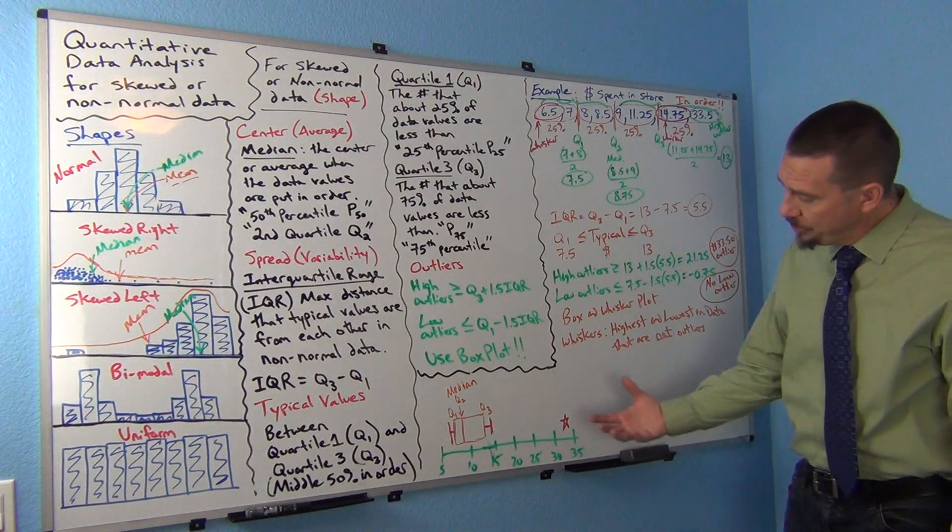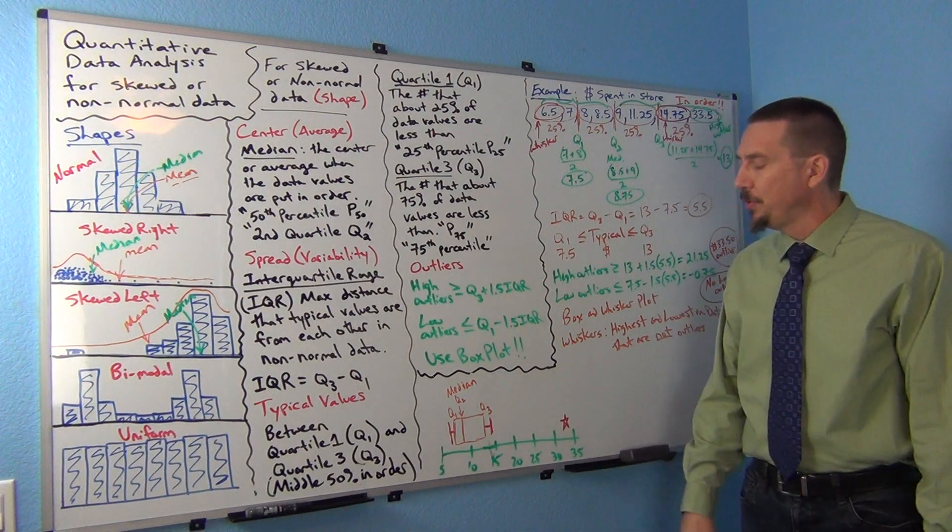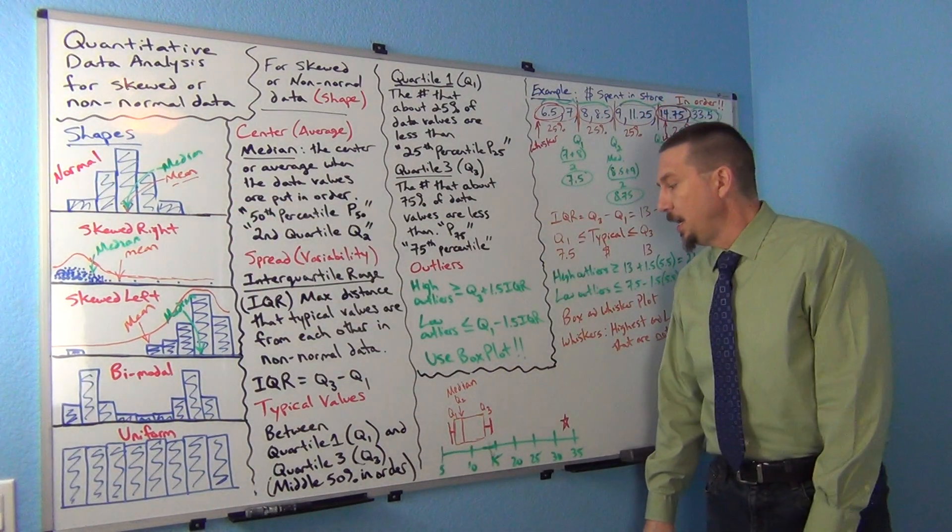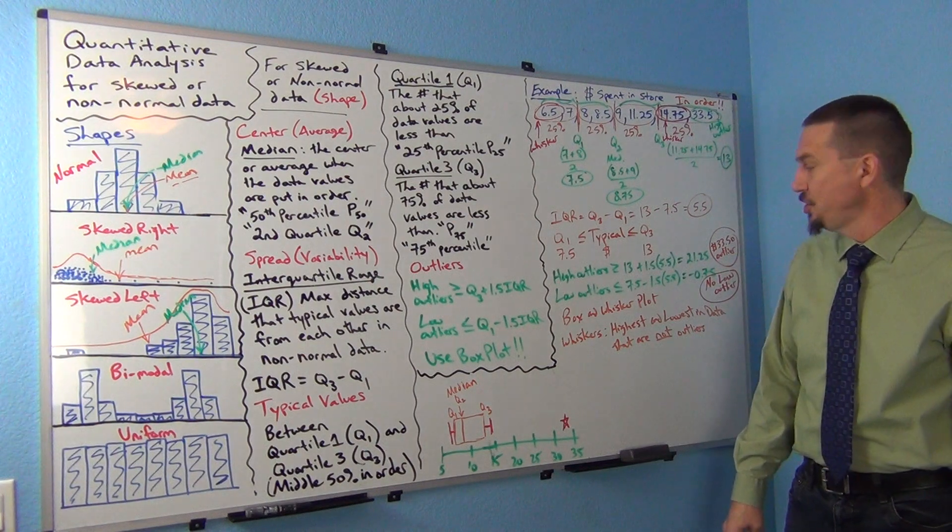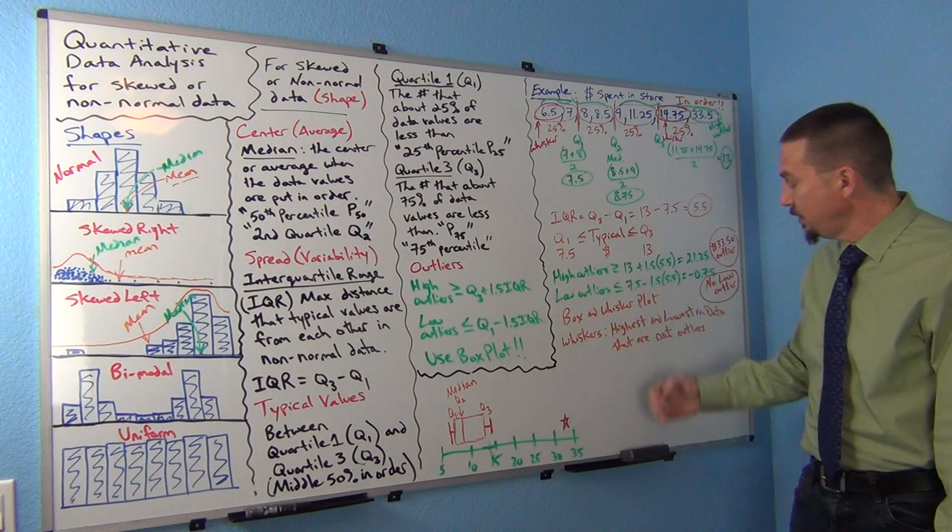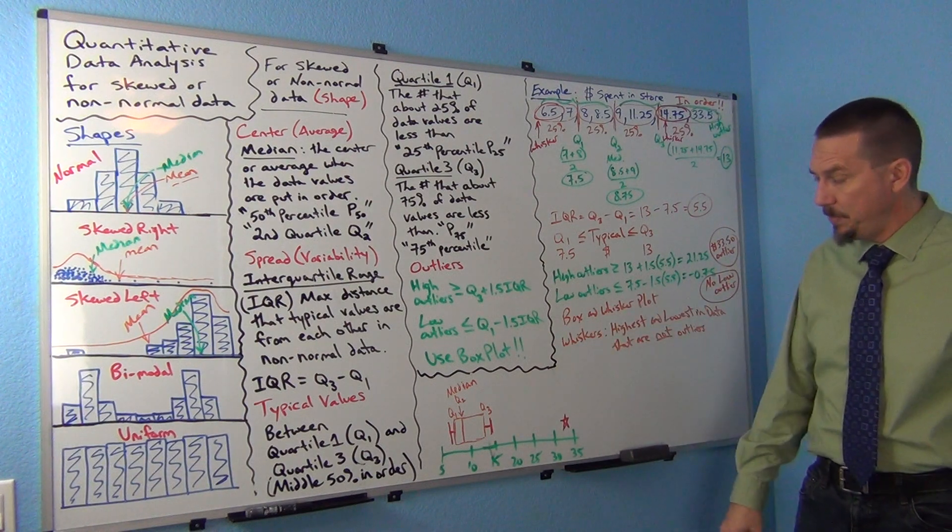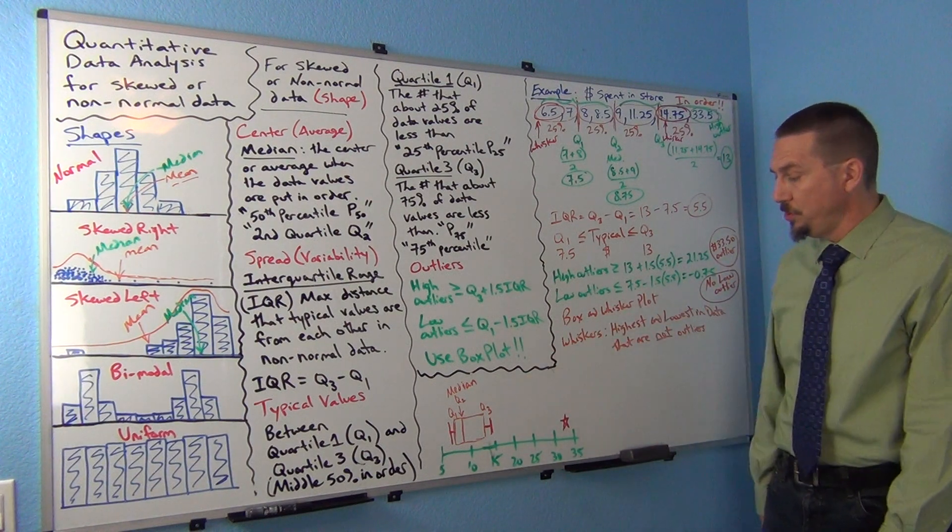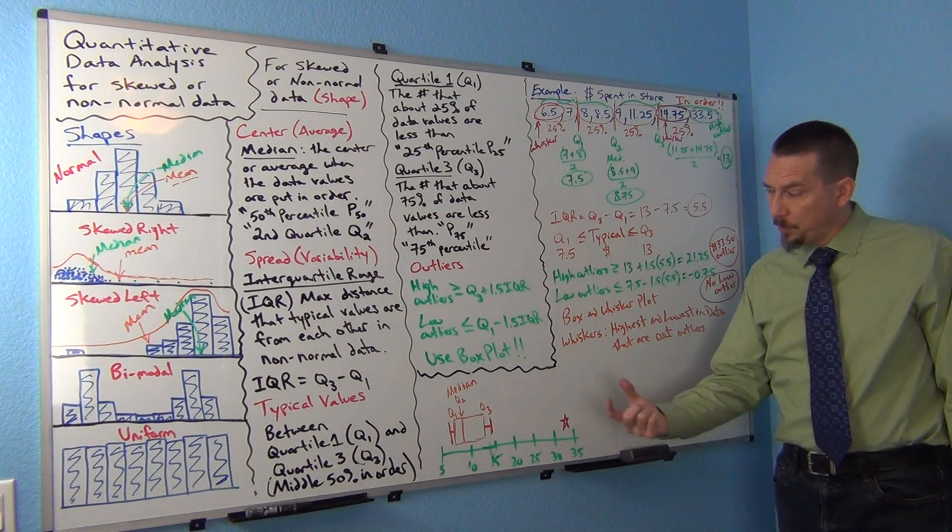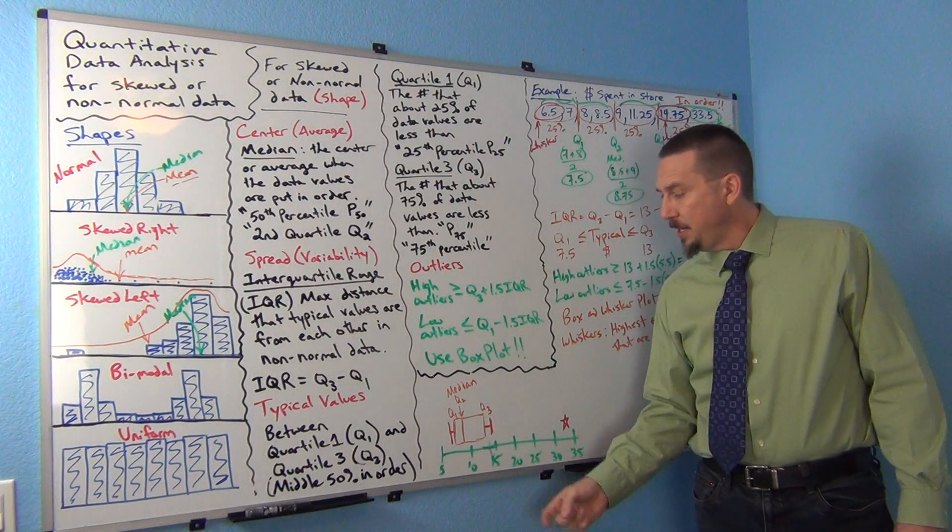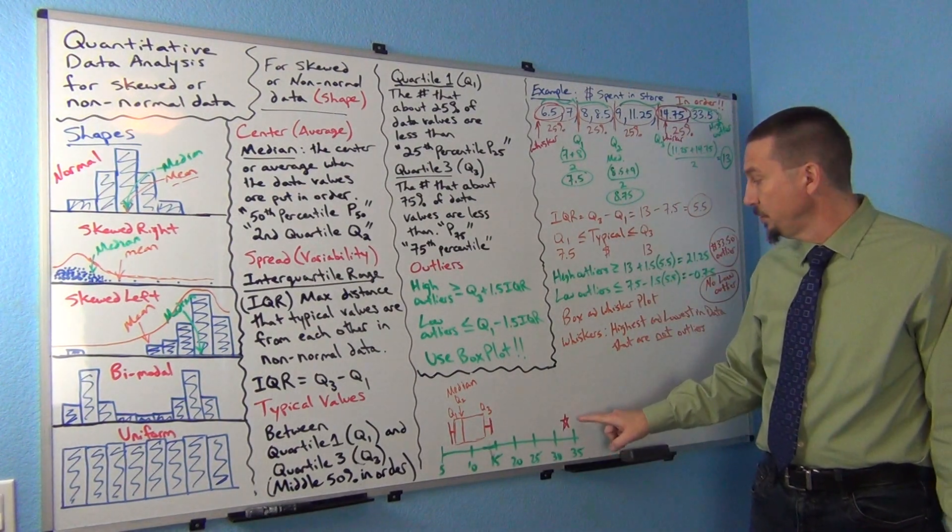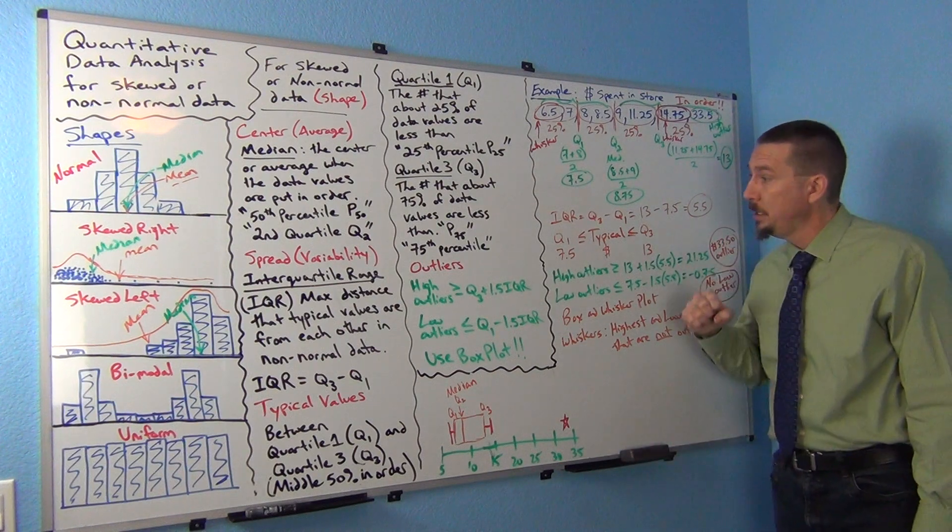So you can sort of get an idea of shape from box plots, though I do prefer looking at a histogram to get shape. Okay, so this is called a box plot or a box and whisker plot, and it's a great graph to make. It kind of shows you visually your whole data in terms of spread. IQR is the length of your box. The line inside is your average. And it also shows you all the outliers. So it's a very useful graph.